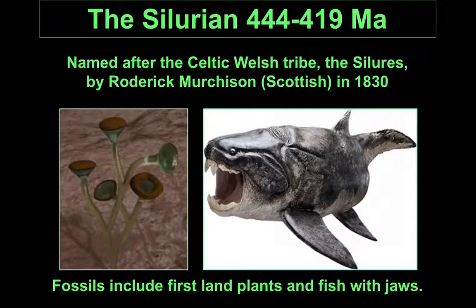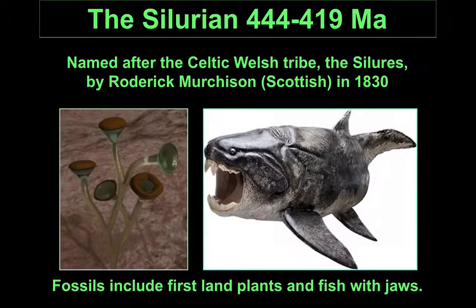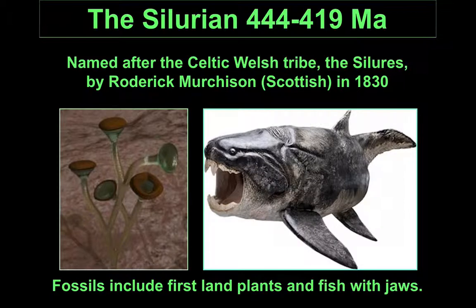The Silurian period, again named after another Welsh tribe, with common rocks found in Wales, is a period where we start seeing some really important developments in the history of life. Jaws on fish evolved at this time, and we find incredibly diverse reefs outcropping along the Welsh borders. Perhaps most importantly, towards the end of this period came the evolution of the first plants on land — the first life to come out of the sea. Without those plants evolving, there would have been no evolution of animals moving onto land.